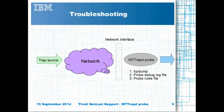If the probe debug log shows the trap data, then the problem is with the probe's rules file. Review the rules files and additional logging to see where the related trap event is being lost. For informs, you may need to use TCP dump on both the source and probe server to understand why the probe drops the inform.